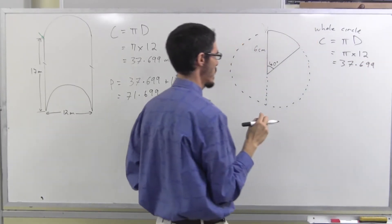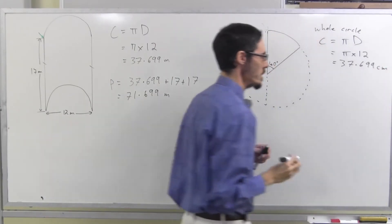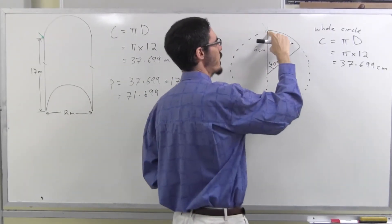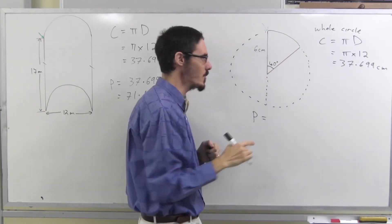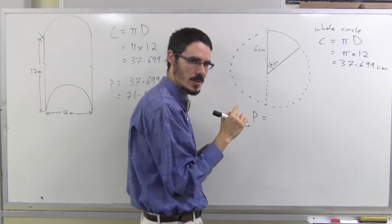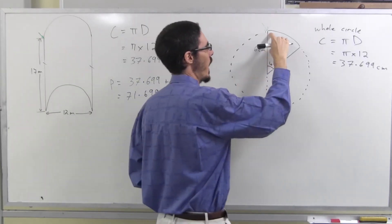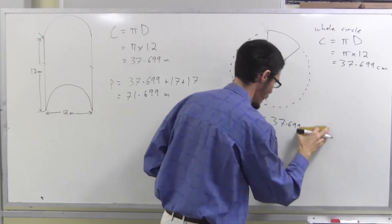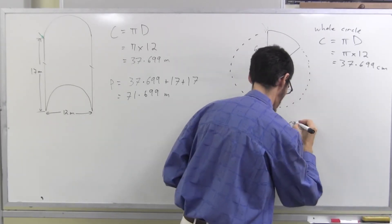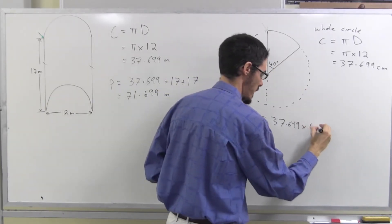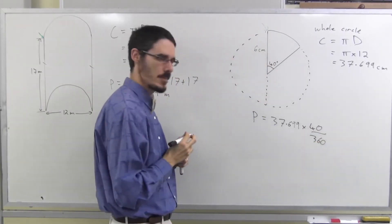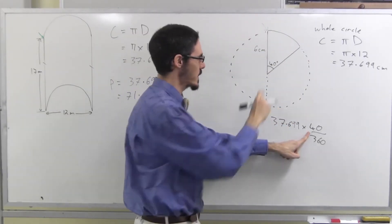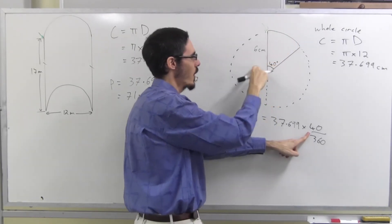37.699 centimeters. So, let's do the perimeter carefully. I need a part of that circle. How much of the circle? 40 degrees. 40 out of what? 360. So, let me write what I just said. Out of the whole circle. That was a messy nine. Let's make that a bit neater. I need 40 degrees out of 360 degrees. See how I did that? If it was the whole circle, it would be 37.699. But it's what fraction of a circle I got? 40 out of the whole 360. Work it out by knowing what it means.